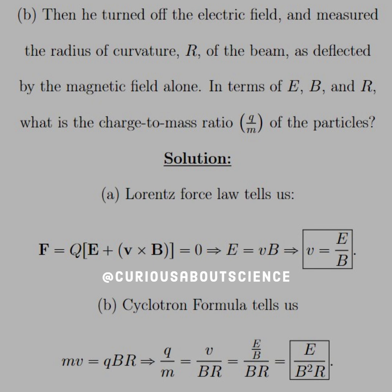For the sake of Part B, though, the cyclotron formula tells us that the momentum MV is equal to QBR. Solving that for the charge to mass ratio QM, we have to divide by BR on both sides, leaving us with V divided by M to the other side, leaving us with Q over M equal V divided by BR.